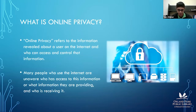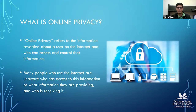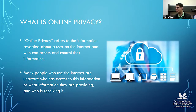So we're going to talk about internet privacy — online privacy. Online privacy refers to information revealed about a user on the internet, and who can access and control that information. More or less, we're talking about information on the internet, mostly your information on the internet.